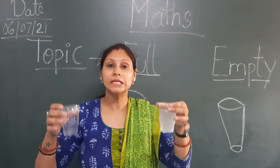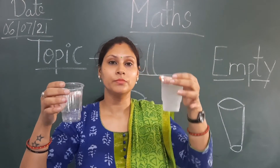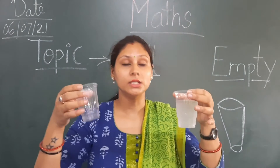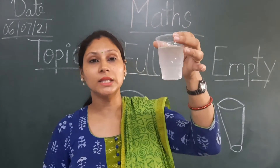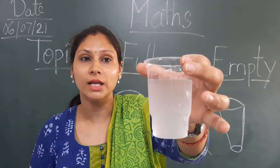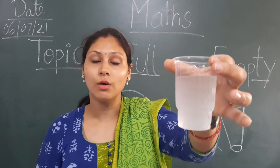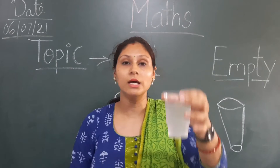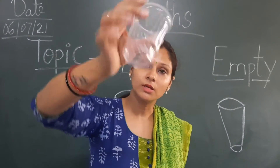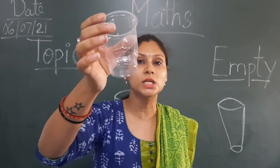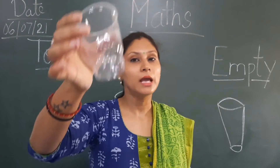Now look at these glasses — I am holding them in my hands. Tell me which one is full and which one is empty. What is in this one? Water — yeh paani se bharah huwa hai, so this glass is full of water. And this glass — ismae kuch bhi nahi hai — so this glass is empty. This glass is full of water and this glass is empty.